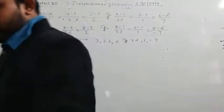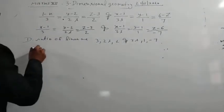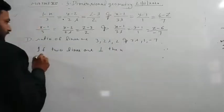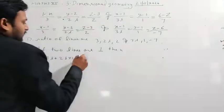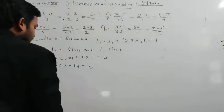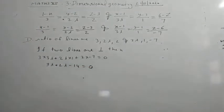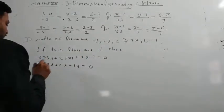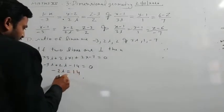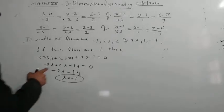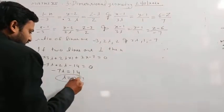If two lines are perpendicular, then a1·a2 + b1·b2 + c1·c2 = 0. So 3 into 3 lambda + 2 lambda into 1 + 2 into (-7) = 0. After correcting signs: minus 9 lambda minus 2 lambda equals -14, giving 7 lambda = -2, so lambda = -2/7.